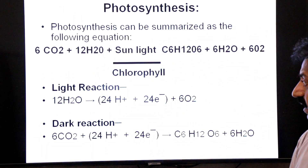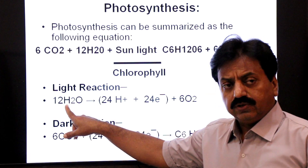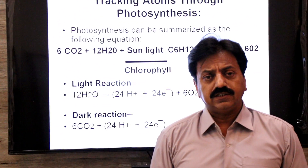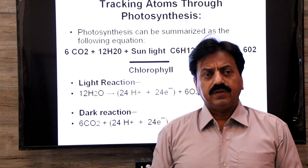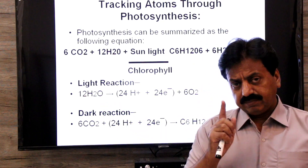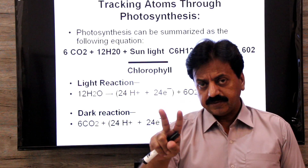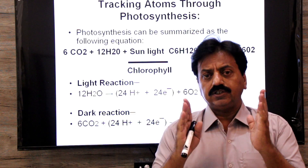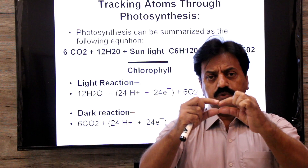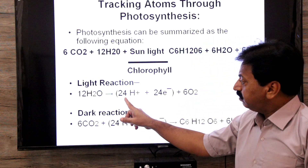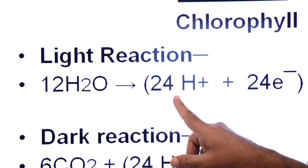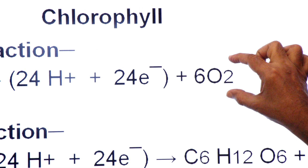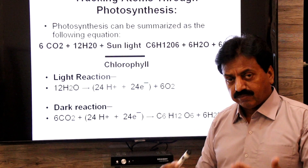The twelve molecules of water taken up by the roots are used in the light reaction. They undergo a process called photolysis of water, where they are split. Splitting one water molecule gives two electrons and one free oxygen atom; splitting two molecules of water gives four electrons and two free oxygen atoms, which together form one molecule of O2.